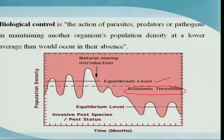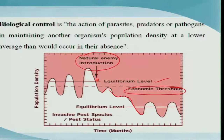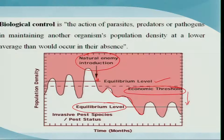At this point, when you actually introduce a natural enemy, these natural enemies act upon the individuals of these pests and then bring down the population and make it into a modified equilibrium level, which will be normally below the economic threshold level. So our main aim here is to bring down the population to a lower level, below what actually causes the economic injury level.